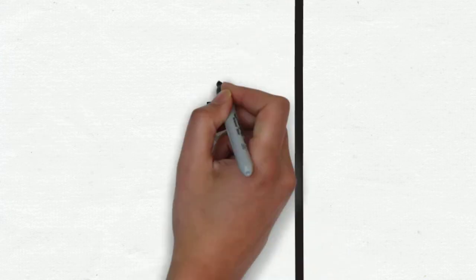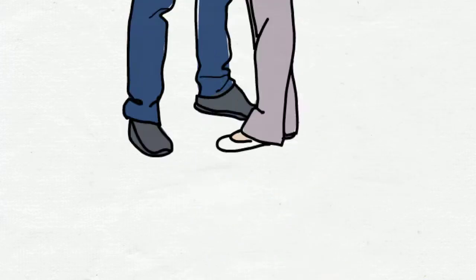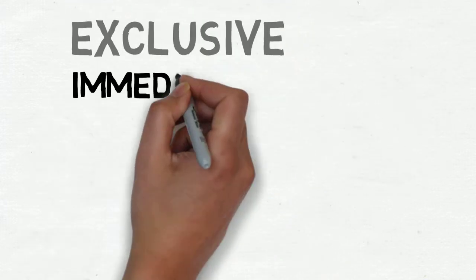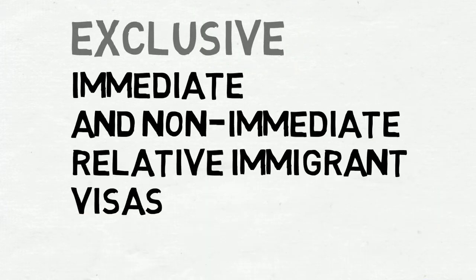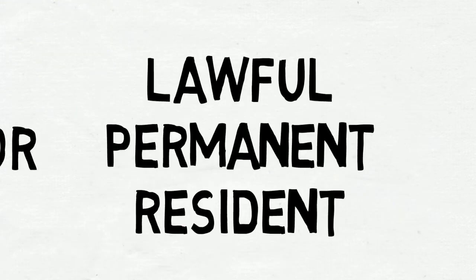One of the most well-known preferences is the family-based preference, and it's exclusive for immediate and non-immediate relative immigrant visas. These visa types are based on a close family relationship with a United States citizen or lawful permanent resident.